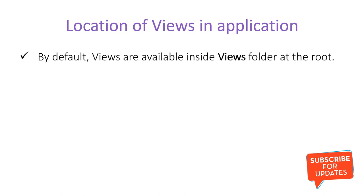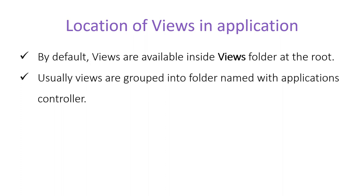By default, views are available inside a Views folder at the root level of the project. All views of the application are placed inside that Views folder. Usually views are grouped into folders named after the application's controllers. Inside a web application we have several pages — for example, in a bookstore application we will have a home page displaying basic details about the application.